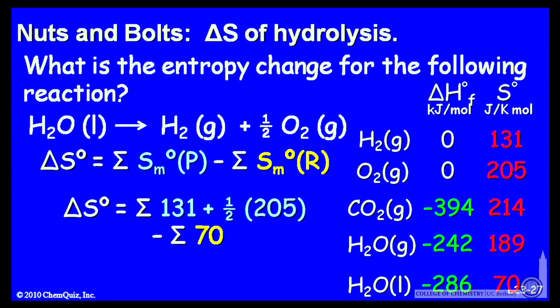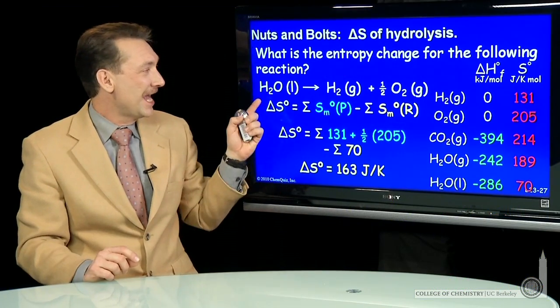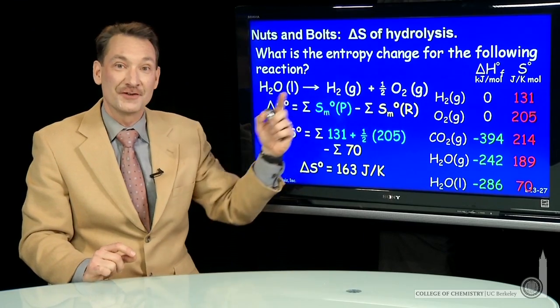Minus the standard molar entropy for a mole of water, 70 joules per Kelvin mole. So we can do that rather simple arithmetic, and the entropy change for this chemical reaction is 163 joules per Kelvin.